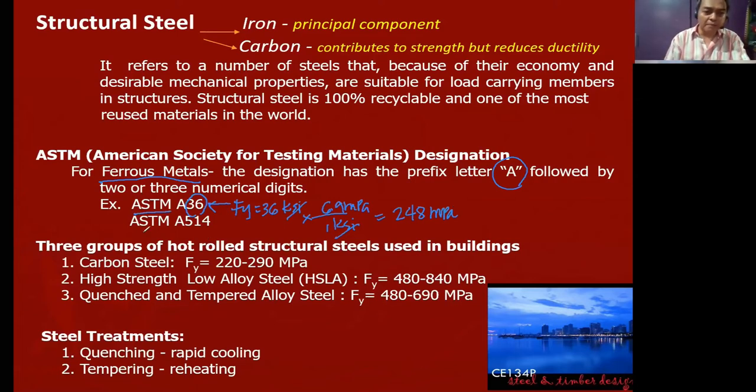The second example is ASTM A514. That's structural steel, but the 514 doesn't mean 514 KSI for the FY, it's just a numerical designation. Another property of A36 steel is the FU, which is equivalent to 400 MPa. Remember that, since we mostly use ASTM A36 steel: FY is always 248 MPa, and FU is 400 MPa. Take note of that.